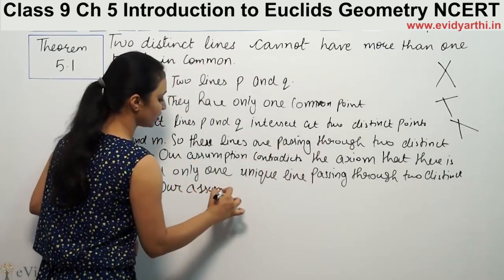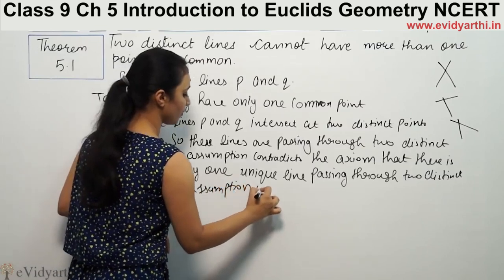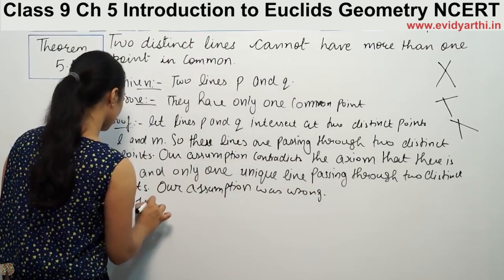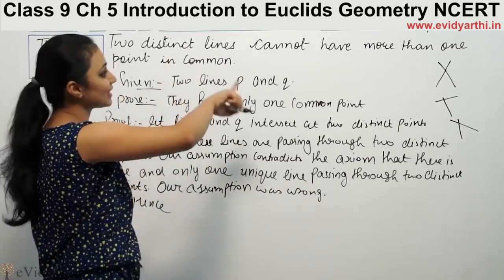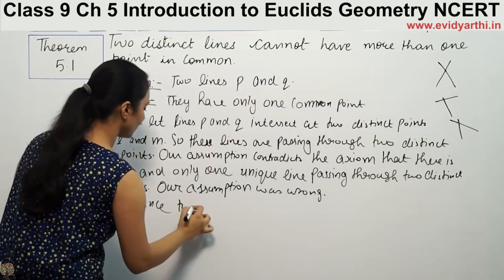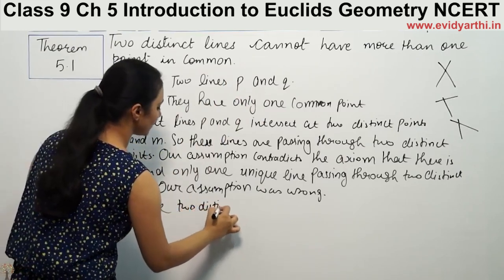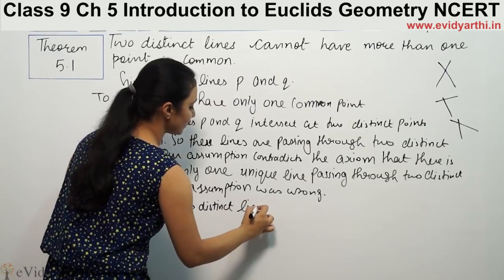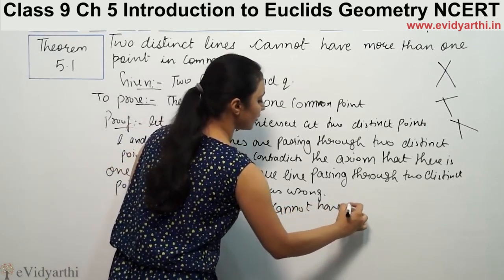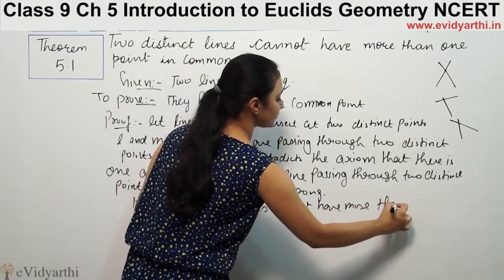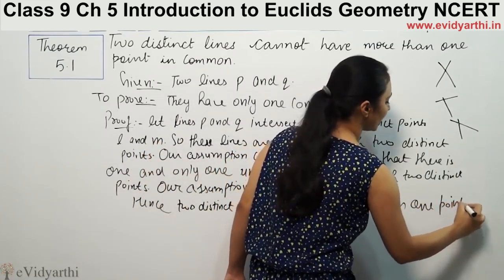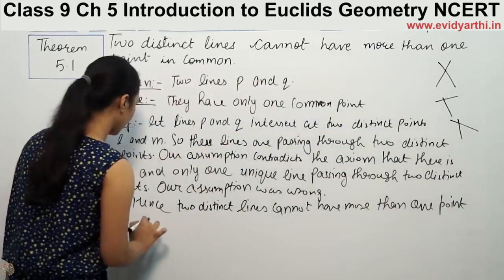So that means our assumption was wrong. Our assumption was wrong. Hence, two distinct lines cannot have more than one point in common.